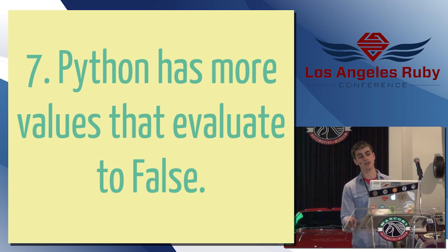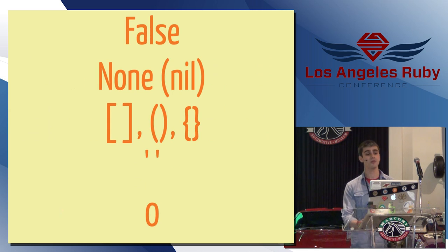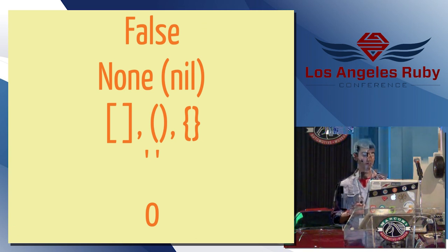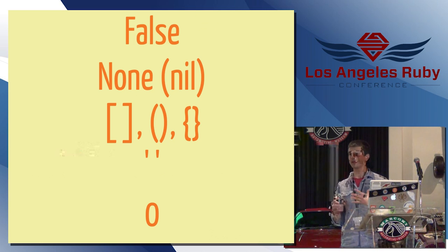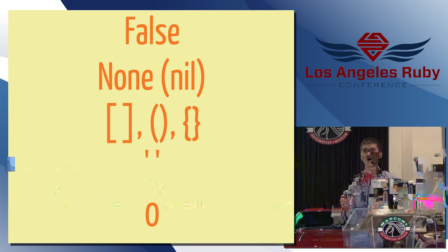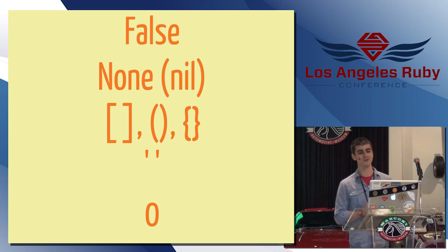Number seven, Python has more values that evaluate to false. In Ruby, false and nil are the values that evaluate to false. In Python, you have false. You have none, which is Python's nil, and then an empty list, an empty tuple, an empty hash, empty string will all evaluate to false. And also zero, whether that's an integer or like a decimal, will also evaluate to false. I think these are all pretty sane except maybe arguably zero, but there are so many hoops we jump through like in Rails, things like that, where we're trying to also make empty things evaluate to false. So I think this is a big help in Python. I think this was a good design decision.